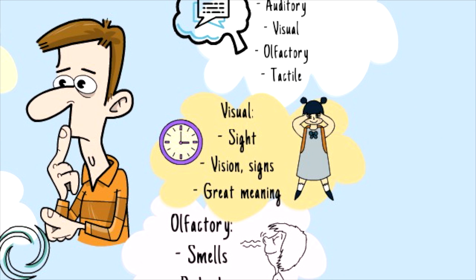What is happening in visual hallucinations is that there may be some visions or signs to which the schizophrenic patient attaches great meaning or significance to that specific sign or specific vision. So this is what is happening in the case of visual hallucination.